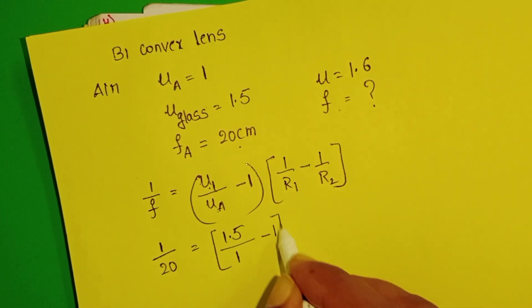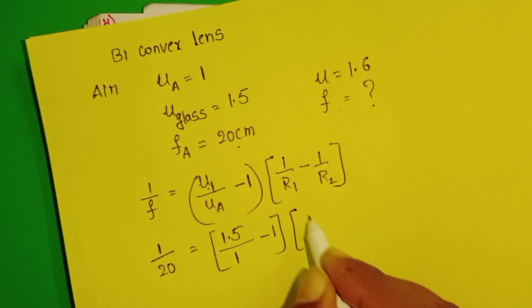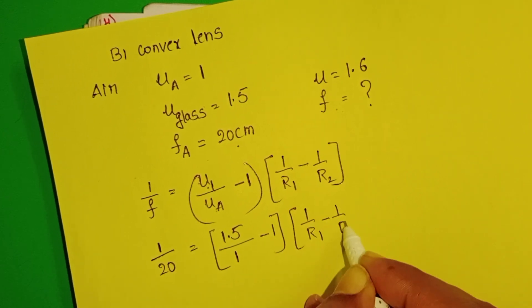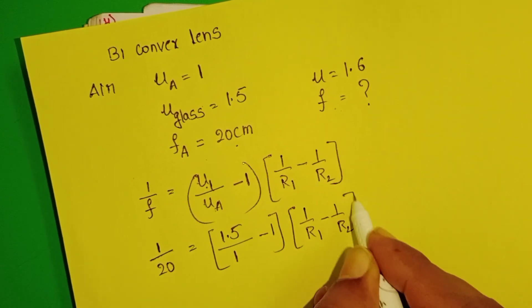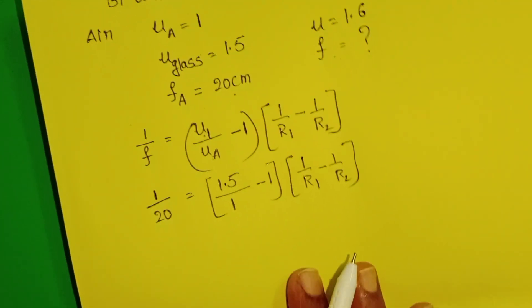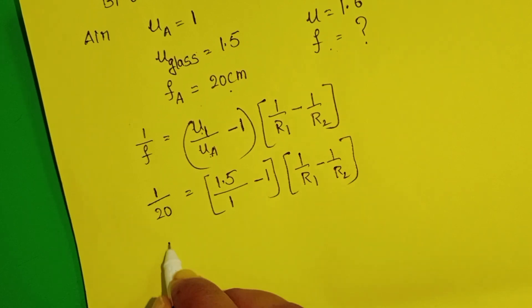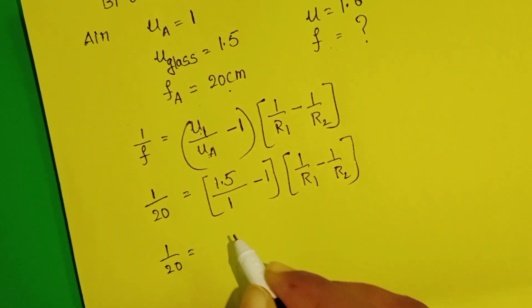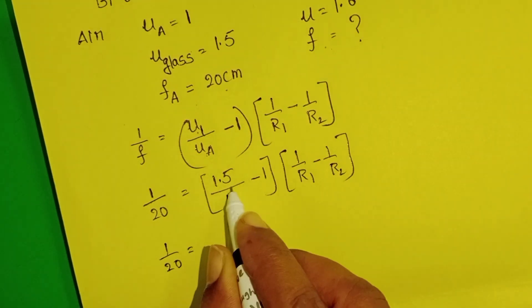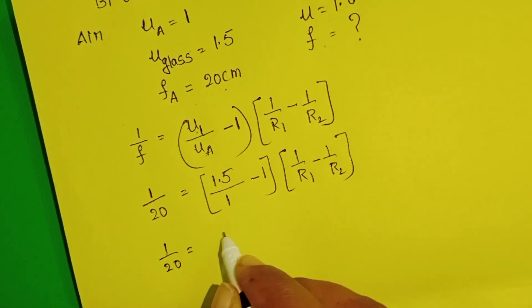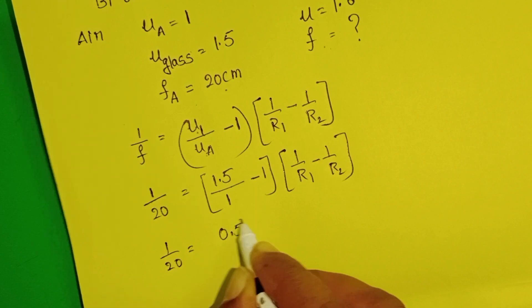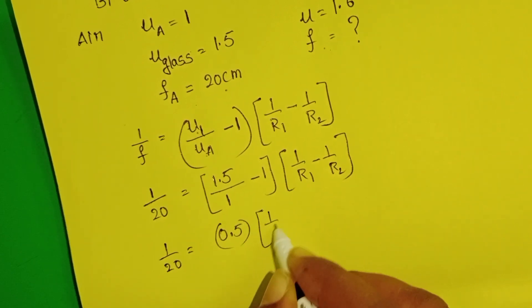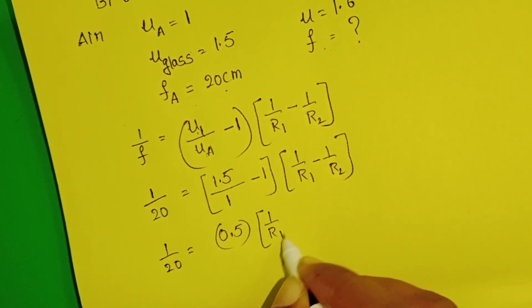Applying this for the lens in air: 1/20 = (1.5 − 1) × (1/R1 − 1/R2). Take this as equation 1.